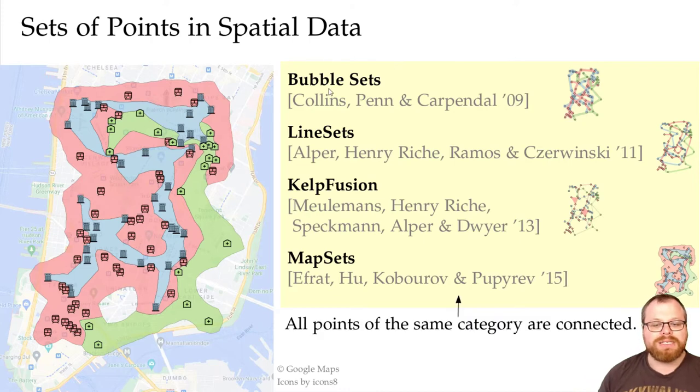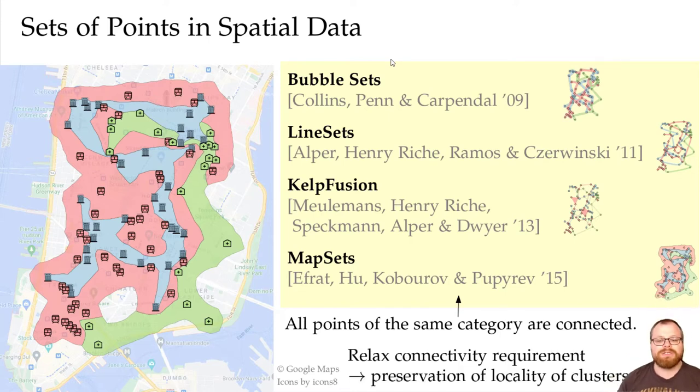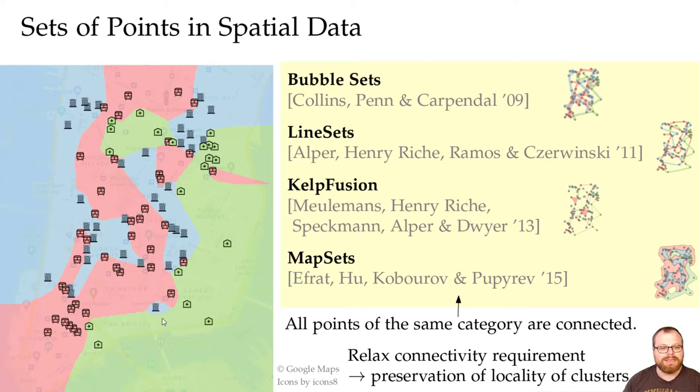In all of these approaches, the points of the same category are always completely connected. In this talk, we want to relax this connectivity requirement to preserve the locality of clusters. That might give us a visualization where we don't have a single green region, but two green regions, four blue regions, and three red regions.